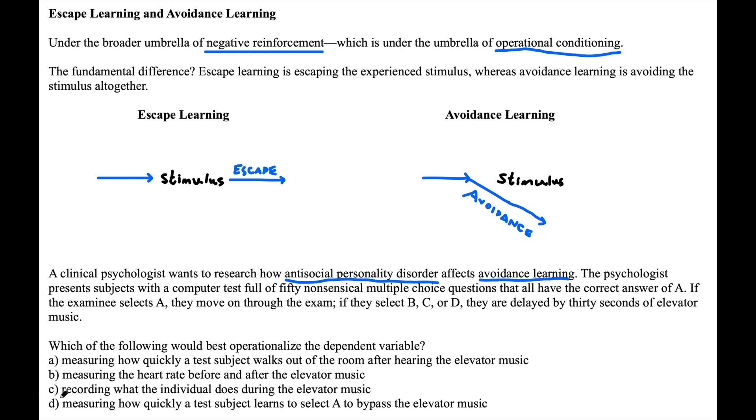Hopefully you picked D. D is an example of avoidance learning because the subject is bypassing the punishment of elevator music, if you consider that a punishment, by learning to select A. So that would be our avoidance learning.